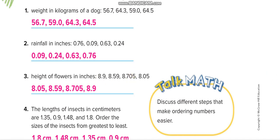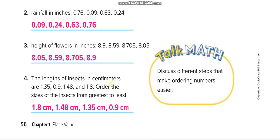In question number four, the lengths of insects in centimeters — order from greatest to least. All values have 0 or 1 at the ones place. Looking at the tenths digit: 8, 4, and 3, with one value at 0. So greatest to least: 1.8, then 1.48, then 1.35, and then 0.9.